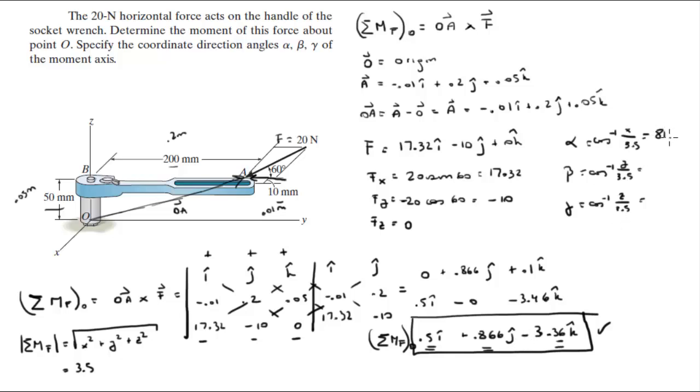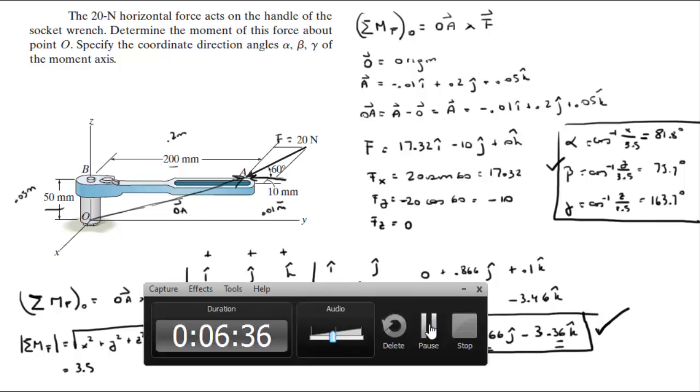So the angles come out to be 81.8 degrees, positive, they are all positive, 75.7 degrees, and 163.7 degrees. Final answer for the direction angles. Final answer for the Cartesian vector form of the moment that F creates about O.